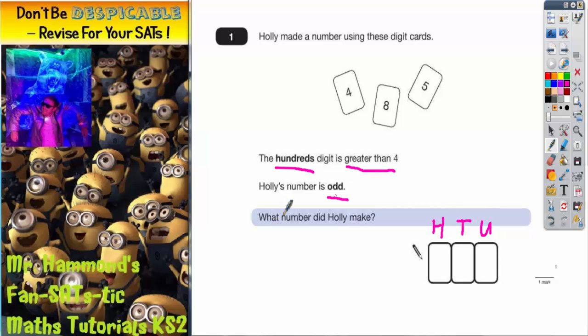If Holly's number is going to be odd, that means the units digit will have to be odd. The only odd number we've got is the five, so the units digit must be five. Okay, so that's that one done.